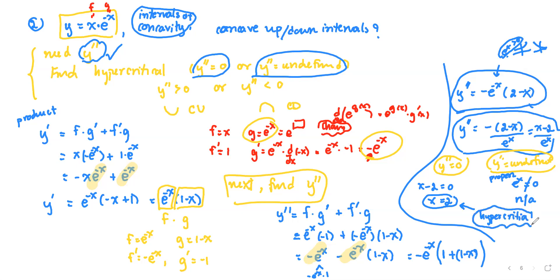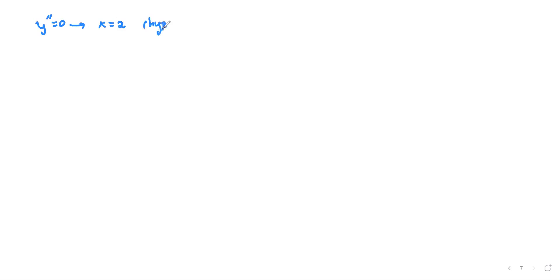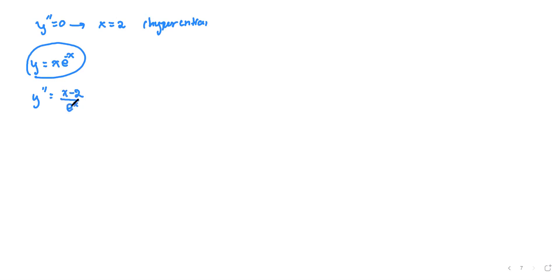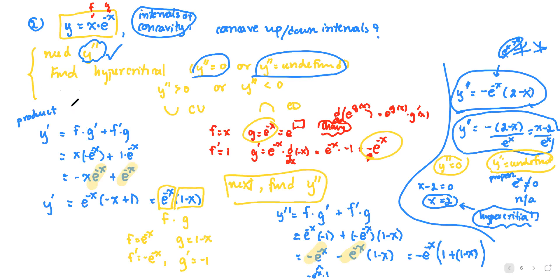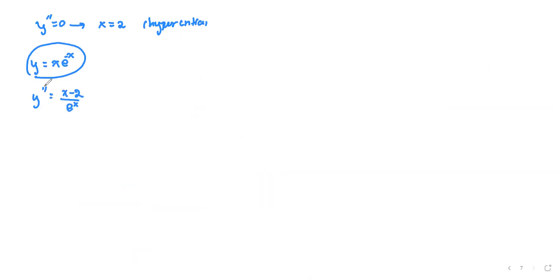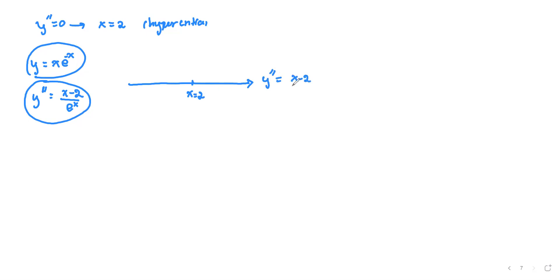Our goal is to identify the intervals of concavity. We have y double prime as x minus two divided by e to the x. We locate the hypercritical value x equals two on the number line, and use the sign of y double prime on each side to determine concavity.